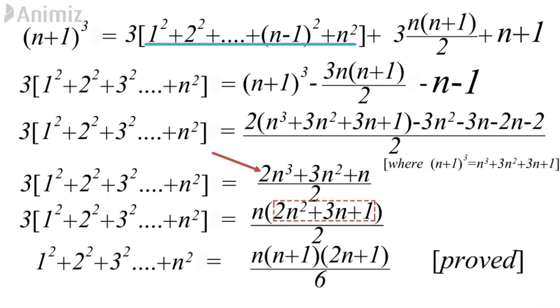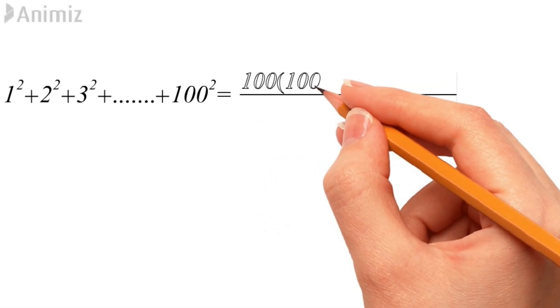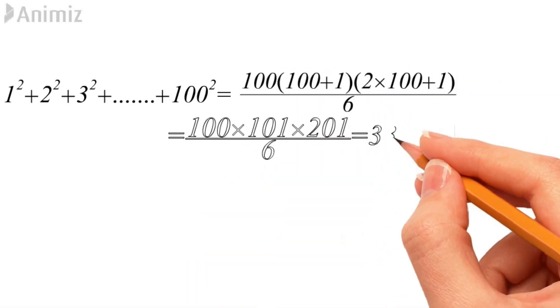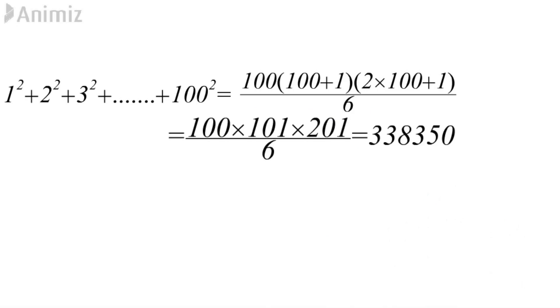The 6 comes from the 3 that was on the left hand side multiplied to the sum of squares — when taken to the right hand side it becomes a division. As an example, for 100 natural numbers: 1 square plus 2 square plus 3 square up to 100 square equals 100 times 101 times 201 divided by 6, and you can see the answer on the screen.